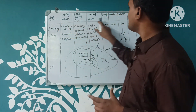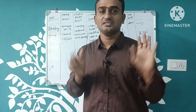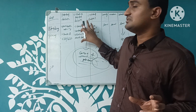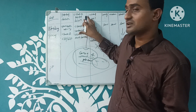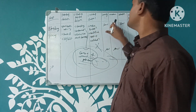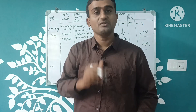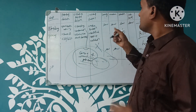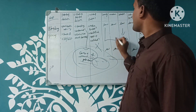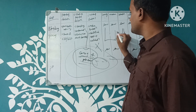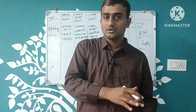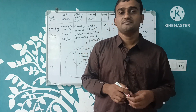The FMEA concept is very straightforward. When you are doing any activity, you will have a potential failure, an effect, a cause, controls, severity, occurrence, and detection — and you document it in a worksheet. After scoring severity, occurrence, and detection, you multiply the three values. The higher the value, the higher the risk; the lower the value, the lower the risk. That's it. Thank you.